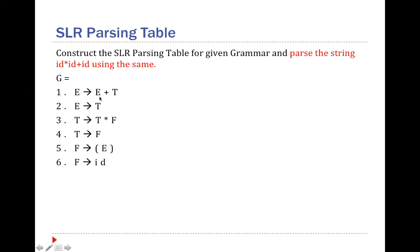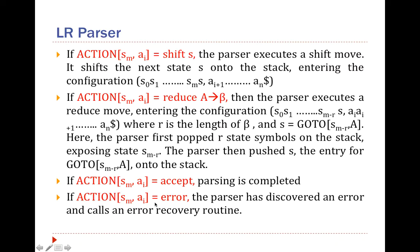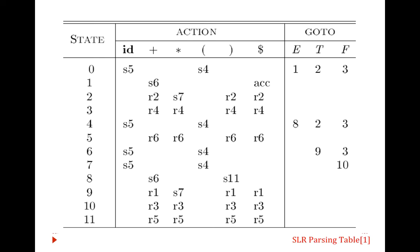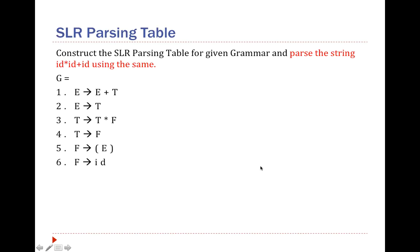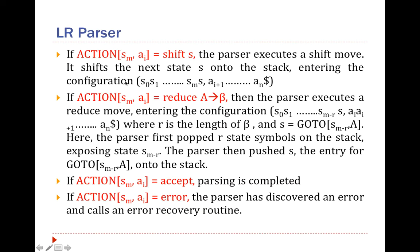I will be referring to the same grammar used for construction of the automata and construction of the parsing table. The SLR parsing table for the given grammar has four types of entries: shift entry, reduce type of entry, accept type of entry, and error type of entry. For these four types of entries, the SLR parser has four possible different ways to handle the parsing procedure.